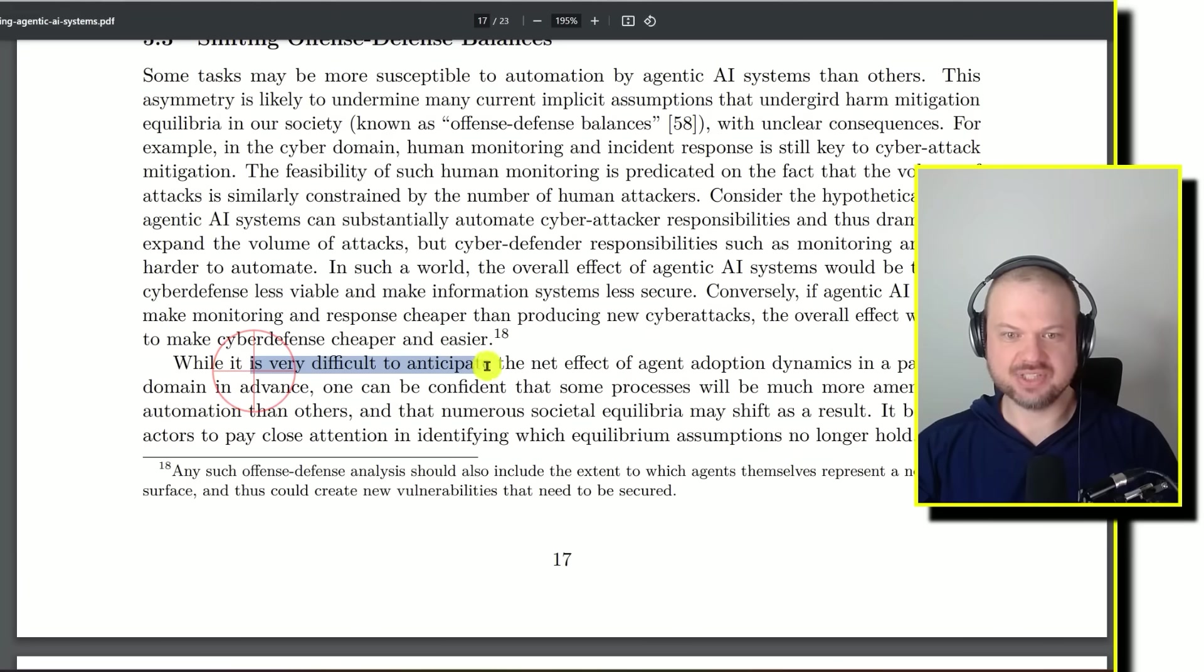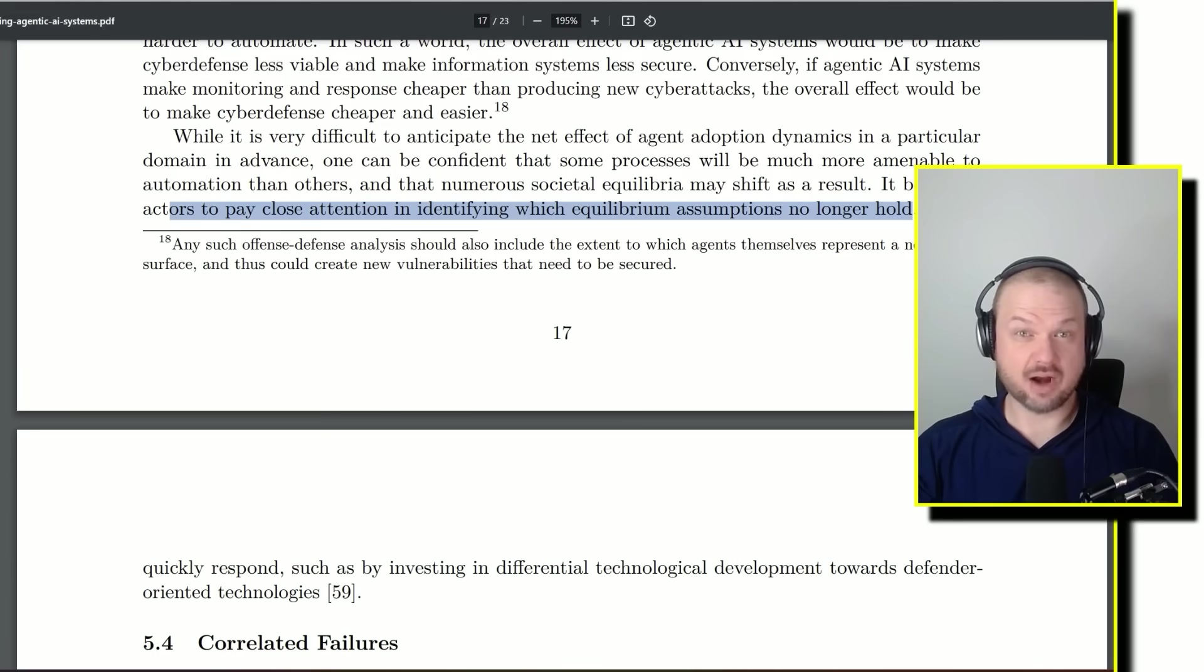So they're saying, well, it's very difficult to anticipate the net effect of these AI adoption dynamics. And saying it behooves actors to pay close attention in identifying which equilibrium assumptions no longer hold. I mean, this is where the conversation about AI drones really comes into play. Specifically, I mean, attack drones that are disconnected from any human operator. What are the defense against those drones? Does attacking then being on the offense, does that become the much more effective tactic than waiting and trying to defend? If that is indeed the case, then the world kind of becomes a more of a scary place.